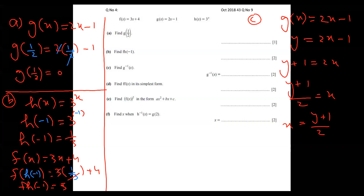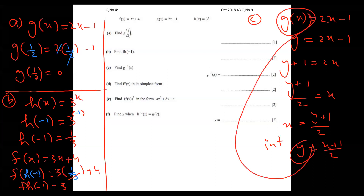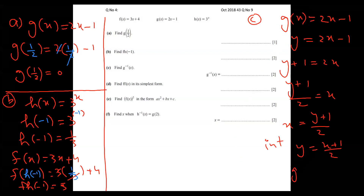No sign change at all. Then interchange x and y — x becomes y and y becomes x. Replace this y with g inverse of x. That is the answer for g inverse, and there should be no trouble with this.